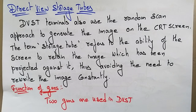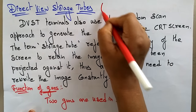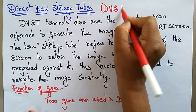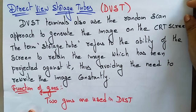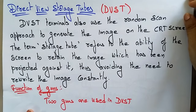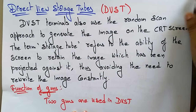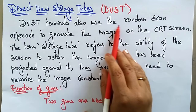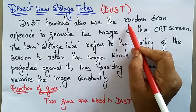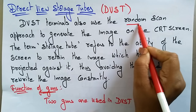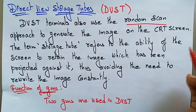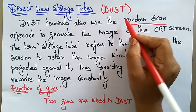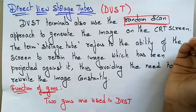Welcome back students. Coming to the next display device, that is the Direct View Storage Tube, which we call DVST. The Direct View Storage Tube terminals also use the random scan approach, so remember that DVST uses the random scan technique.